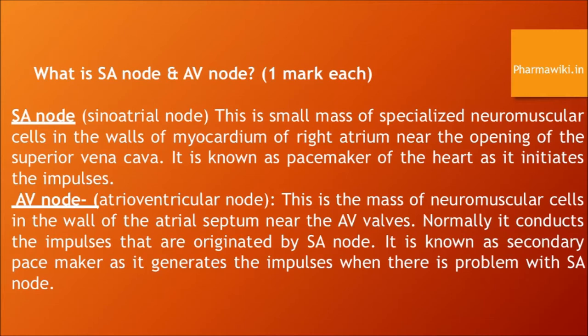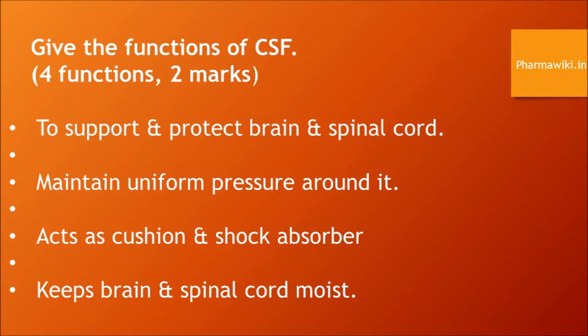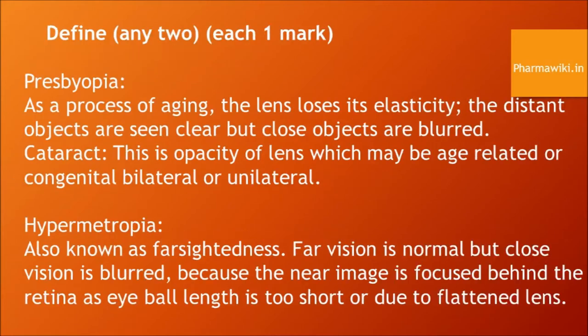Definitions of eye conditions. Presbyopia: as a process of aging, the lens loses its elasticity; distant objects are seen clearly but close objects are blurred. Cataract is opacity of the lens, which may be age-related or congenital, bilateral or unilateral. Hypermetropia, also known as farsightedness: far vision is normal but close vision is blurred because the near image is focused behind the retina, as the eyeball length is too short or due to flatness of the lens.